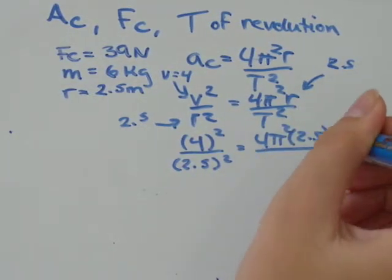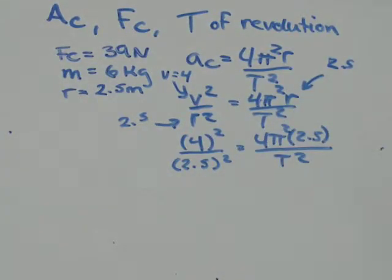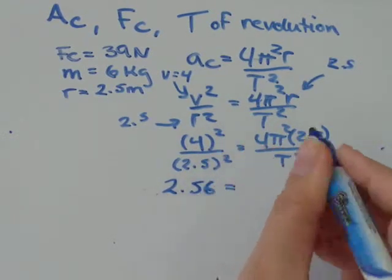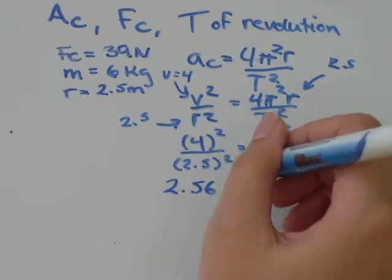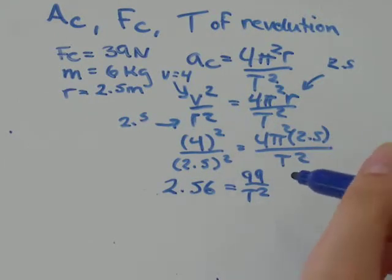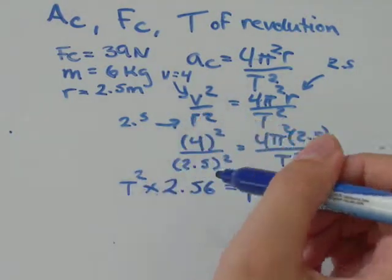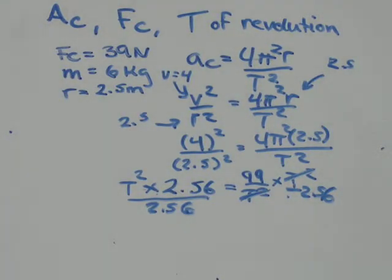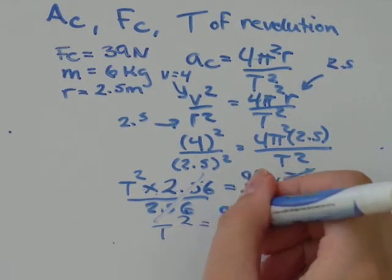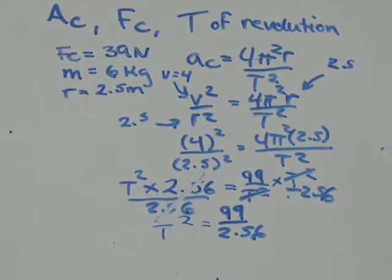4 squared divided by 2.5 squared, I get that's equal to 2.56. 4 times pi squared, that just means 4 times pi times pi, and I get that's equal to about 99 over t squared. So all I'm going to do is multiply by t squared on both sides and then divide by 2.56 on both sides. And then what I should have is t squared equals 99 divided by 2.56. 99 divided by 2.56 I get is equal to 38.5.